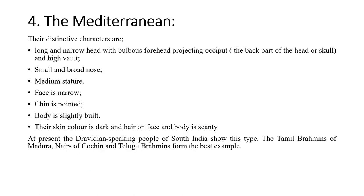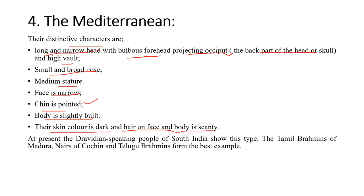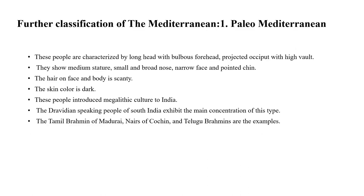Coming to Mediterraneans. Distinguished characteristics include long and narrow head, vaulted forehead, projecting occiput — the back part of the skull — high vault, small and broad nose, medium stature, narrow face, pointed chin, slightly built body, dark skin color, and scanty hair on face and body. At present, Vedic-speaking people of South India, Tamil Brahmans of Madurai, Nairs of Cochin, and Telugu Brahmans are the best examples.